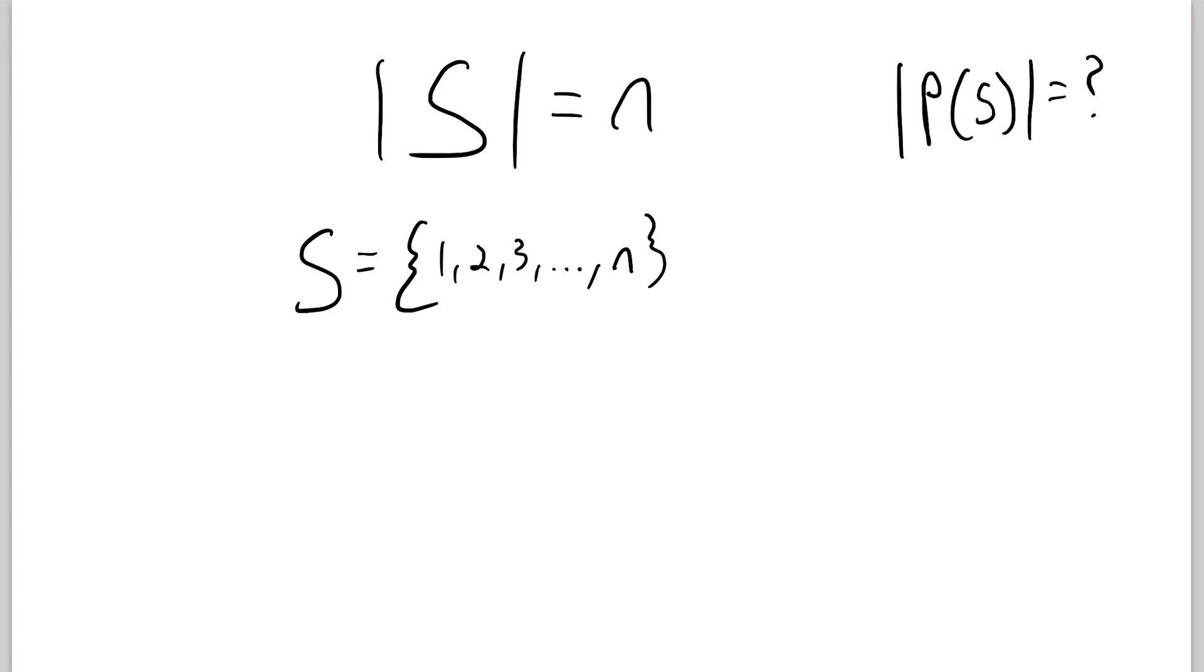Well, if we're building a subset of S, then that subset can either contain or not contain this element we've labeled 1. So right there is two possibilities. The subset could contain it or it could not contain it. Same thing, that subset could either contain or not contain the element we've labeled 2.